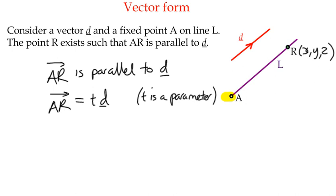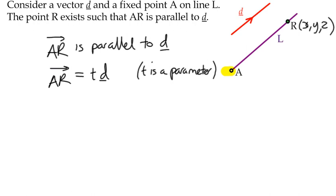In other words, we know that vectors that are parallel are multiples of each other. So all we can see here is that if you multiply vector D by some parameter or some constant value, it's going to give us vector AR. We can use the position vectors A and R to change the vector AR into position vector R minus position vector A, hopefully that makes sense, equals T times vector D.